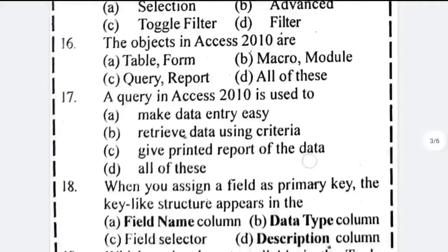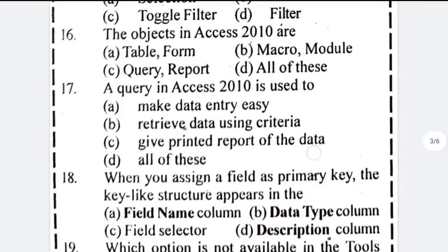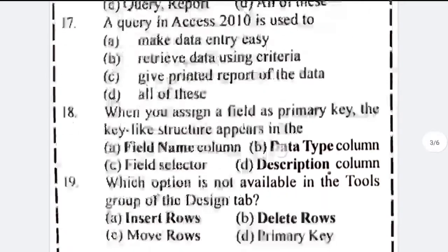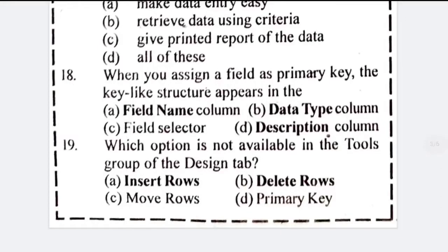Number 16: the objects in Access 2010 are table, form, macro, module — all of these. Number 17: a query in Access 2010 is used to — answer will be all of these. Number 18: when you assign a field as primary key, the key-like structure appears.